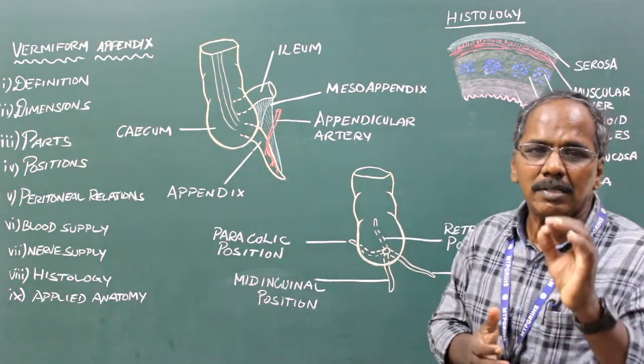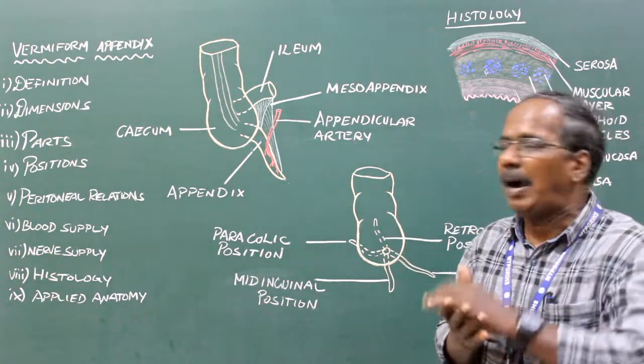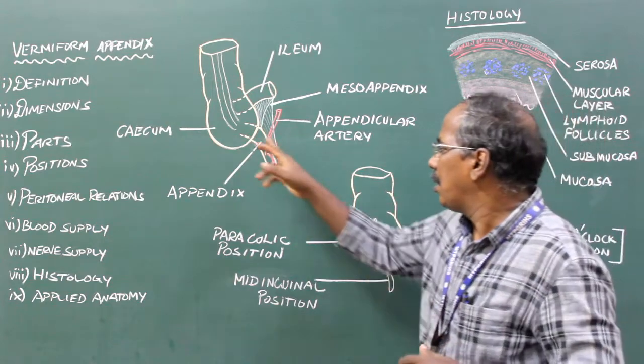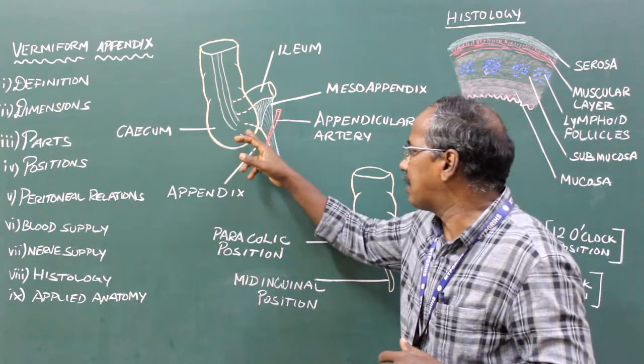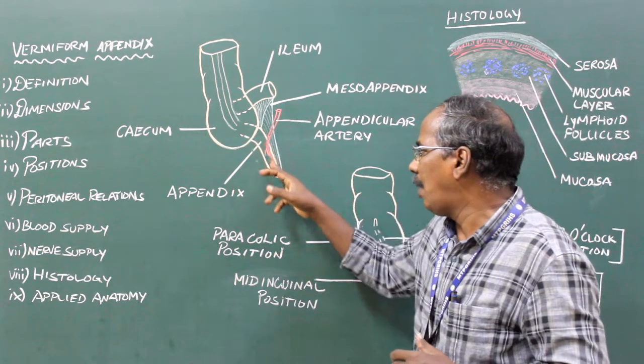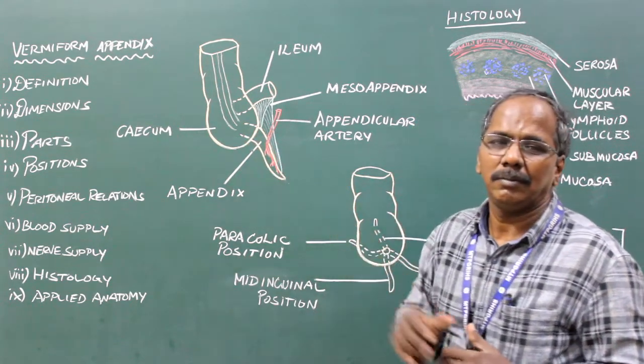Parts. The appendix consists of 3 parts: Base, Body, and Apex.